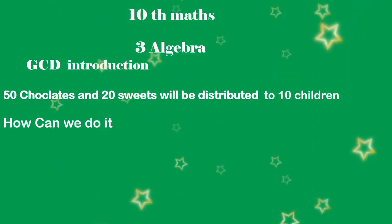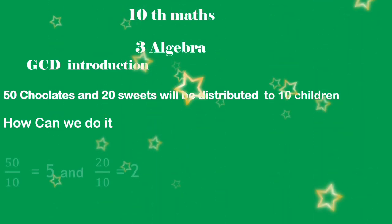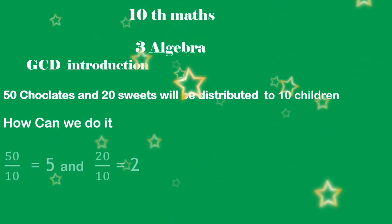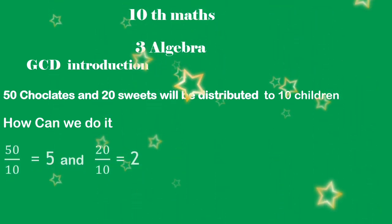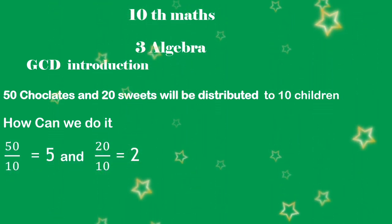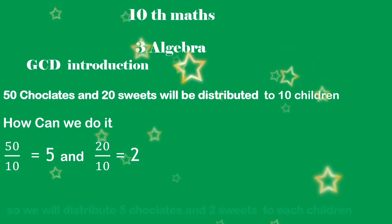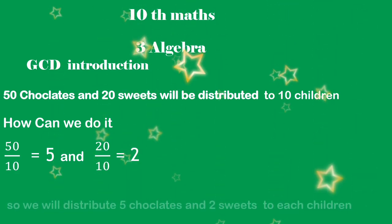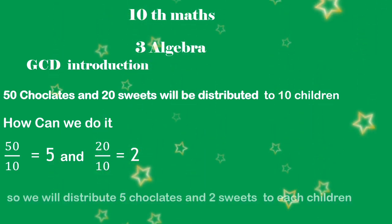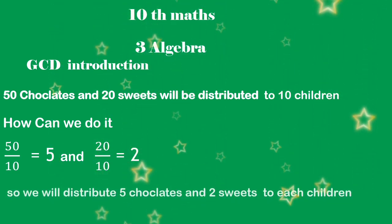50 chocolates divided by 10 children equals 5, and 20 sweets divided by 10 children equals 2. So we will distribute 5 chocolates and 2 sweets to each child. 10 is the GCD of these two numbers.